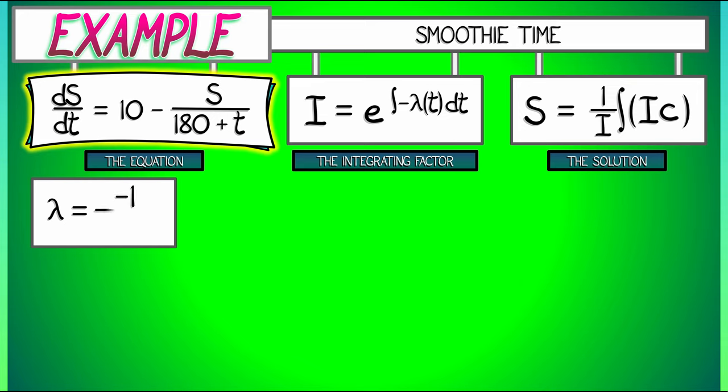The function in front of the S term is negative one over (180 plus t). The C term in this case really is a constant - it is precisely 10.